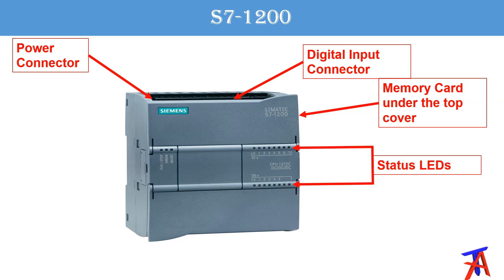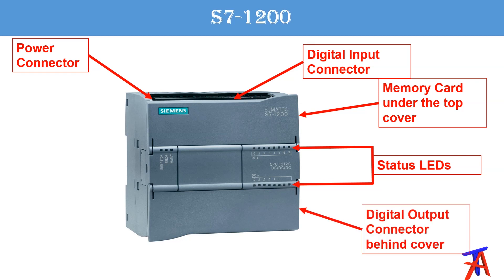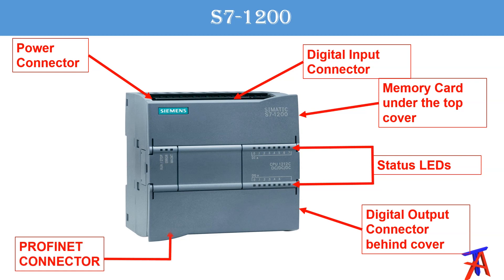These are the status LEDs — the upper LEDs are for digital inputs and the bottom LEDs are for digital outputs. There is a digital output connector at the very bottom side of the PLC, under the flap, and there is a Profinet connector on the bottom left side. There are three other LEDs which show run, stop, error, and maintenance mode of the PLC.